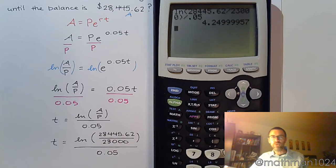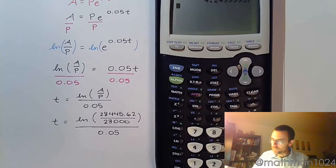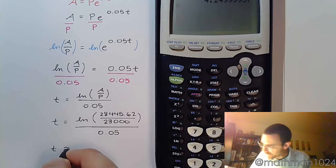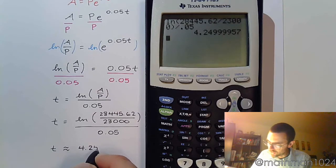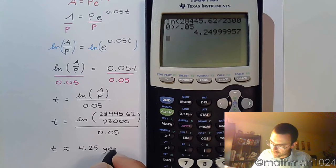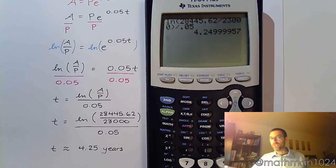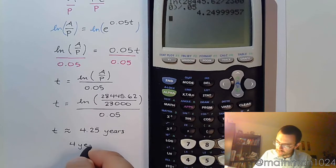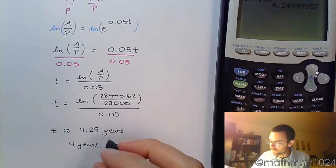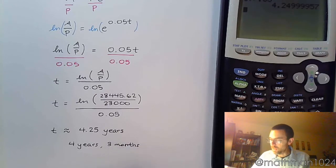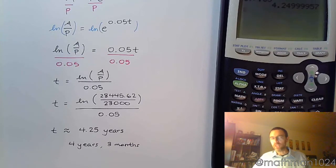We come up with this value. Time is measured in years, so let's round appropriately. T is approximately 4.25 — that's a clean place to round to the nearest hundredths, and even to the nearest thousandths it's still 4.25. That means you will reach this value after four years and three months, because 0.25 of a year corresponds to three months. So you could check your bank statement after four years and three months and see exactly $28,445.62.